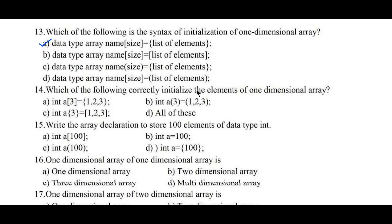Question number fourteen: which of the following correctly initializes the elements of a one-dimensional array? Option a) int a[3] = {1, 2, 3}. Option b) int a(3) = (1, 2, 3). Option c) int a{3} = [1, 2, 3]. Option d) all of these. Option a is the right answer. Question number fifteen: write the array declaration to store 100 elements of data type int. Options: a) int a[100], b) int a = 100, c) int a(100), d) int a = {100}. Option a, int a[100], is the correct array declaration.